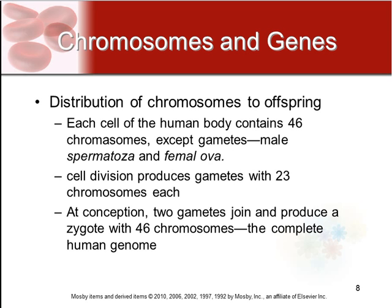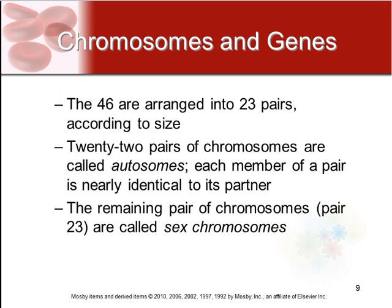Each cell of the human body contains 46 chromosomes, except for your gametes — which are the sperm and the ova. Each of these cells produces just 23 chromosomes, because they need to join together to make one full human chromosome to start the production of new life. At conception, these two join to make the complete human genome. These 46 chromosomes are arranged into 23 pairs according to size and shape. Twenty-two of these pairs are called autosomes, meaning each partner is almost identical to it.